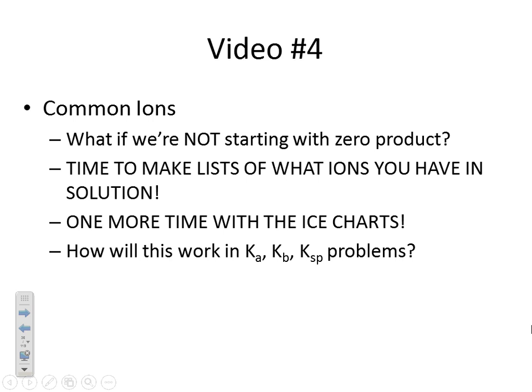What I'm going to be discussing in this video is basically what if we're in a situation where we are not starting with zero product — that's a common ion type of problem. We're going to be making lists of ions in solution, seeing ICE charts again, and then I'll end with talking about how we can do a common ion problem with Ka, Kb, or Ksp, along with an example problem.